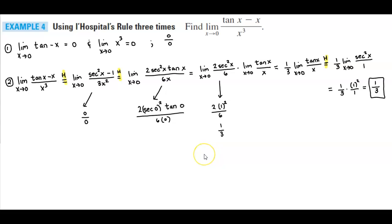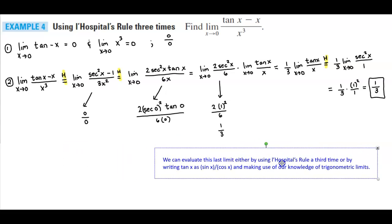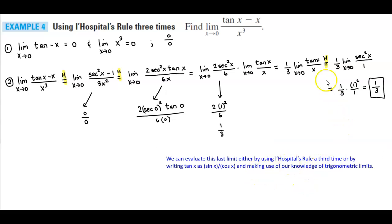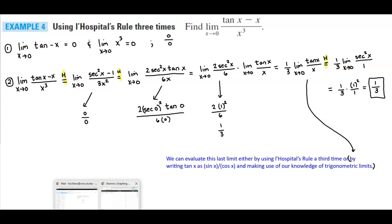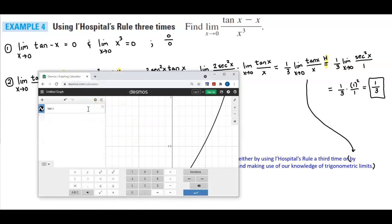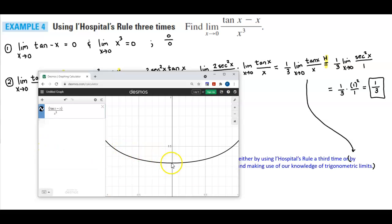We could also evaluate that last limit by writing tangent x as sine x divided by cosine x and using our knowledge of trigonometric limits, as an alternative to applying L'Hôpital's rule a third time. Let's graph the function — tangent x minus x divided by x cubed — to confirm visually. As x approaches zero from the left and from the right, the graph approaches 0.333, which is one third.